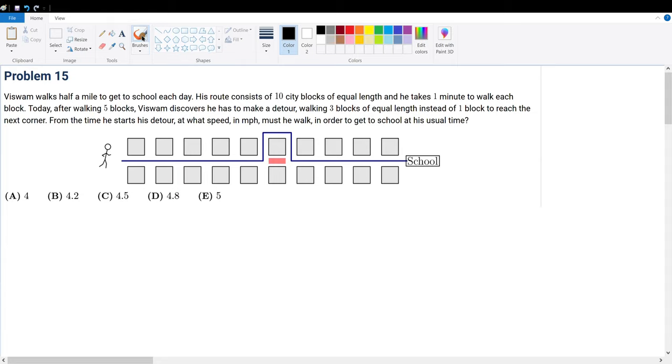Problem 15: This one walks half a mile to get to school every day, so distance equals 0.5 miles. His route consists of 10 city blocks of equal length and he takes one minute to walk each block, so the total time must be equal to 10 times 1, which is 10 minutes. That's how much time it takes for him to get to school after walking the 10 blocks.